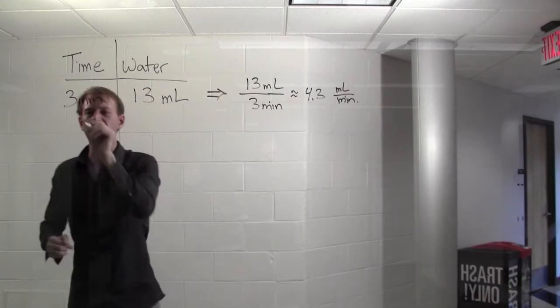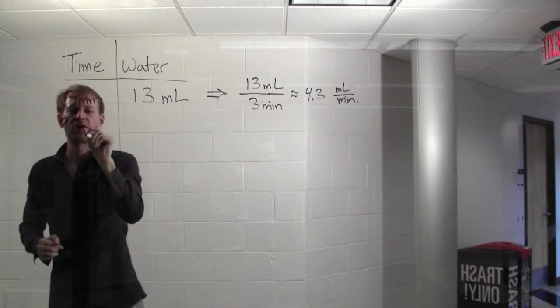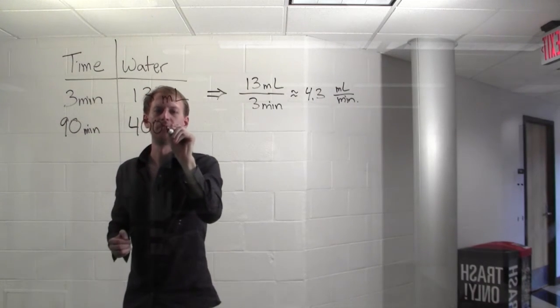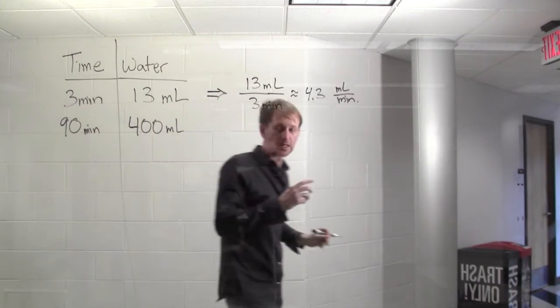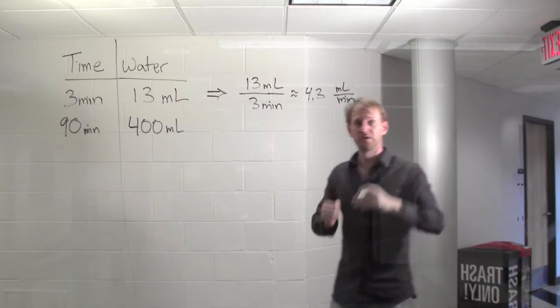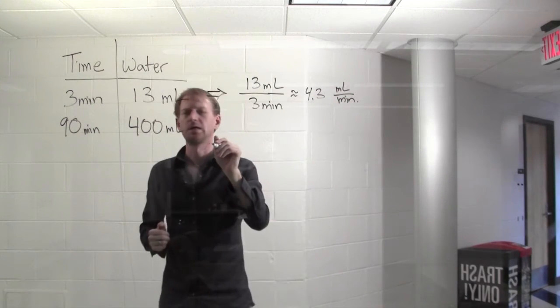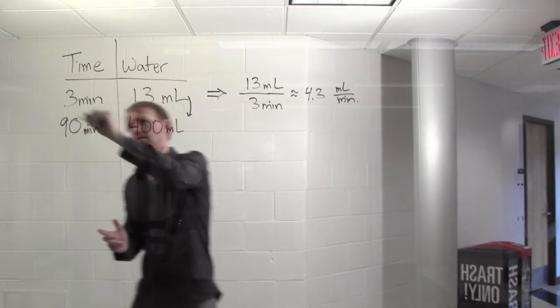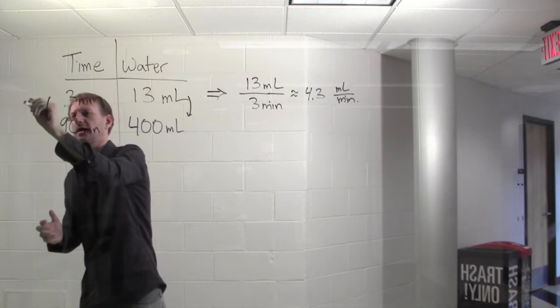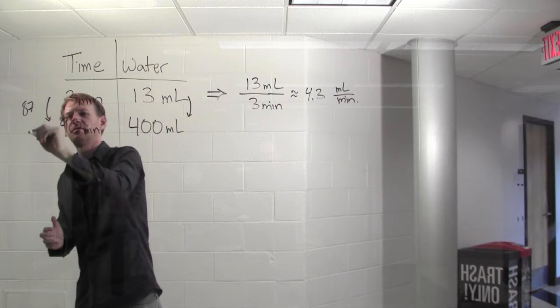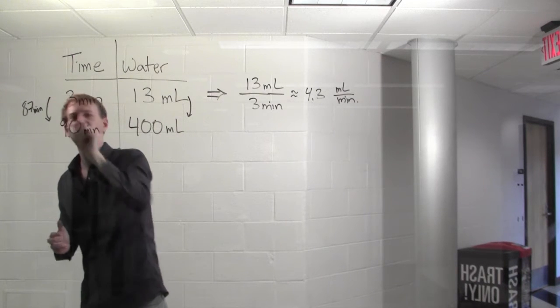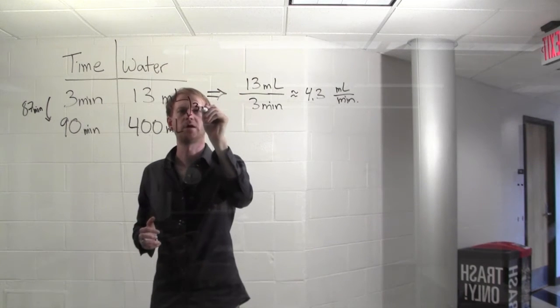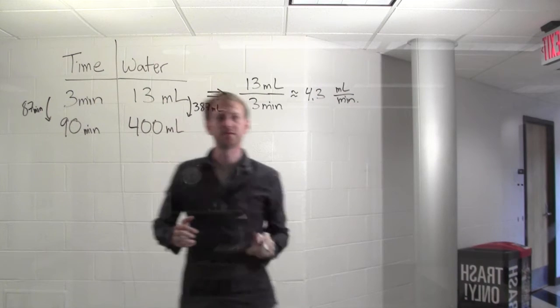Later, we checked it, and we found that after 90 minutes there were 400 milliliters. Well, this tells us since going from here to here we have a difference of 87 minutes, and going from here to here we have a difference of 387 milliliters.